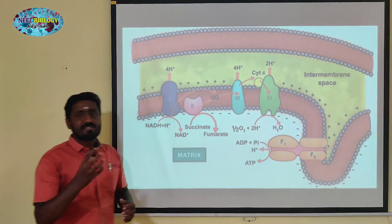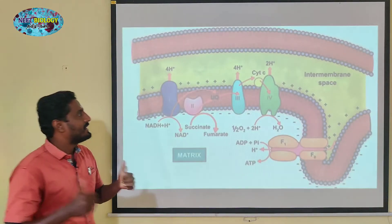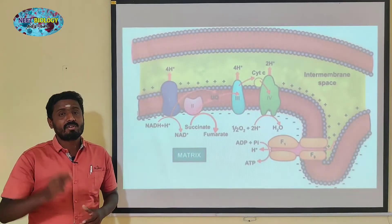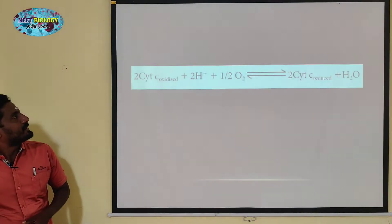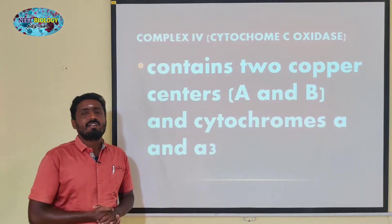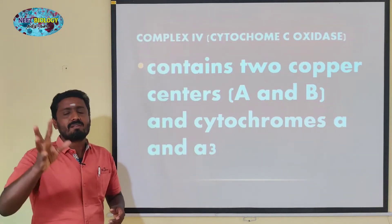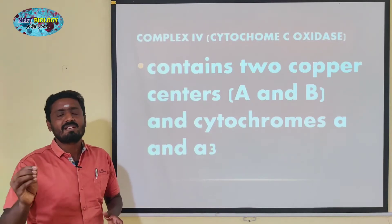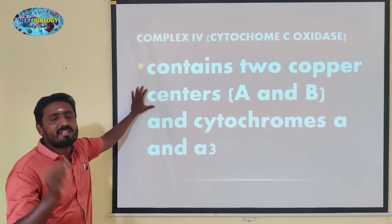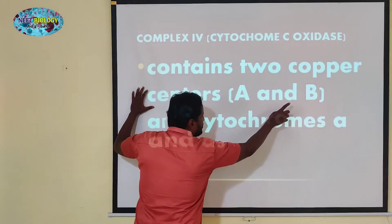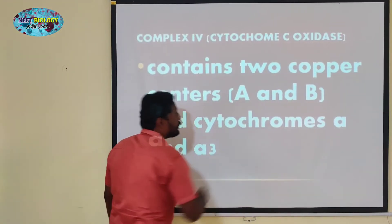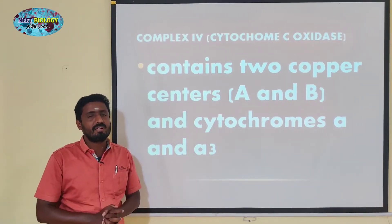In Cytochrome C1, H+ ions and electrons are transferred. In Complex 4, there are two copper centers. The copper center is one of the key components that accumulates and induces reactions. That reaction is centered on the copper center. This is Complex 4, with copper centers A and B.